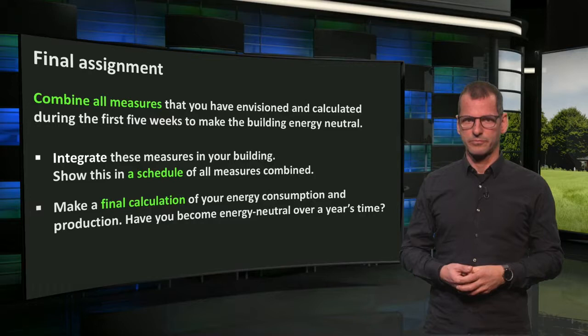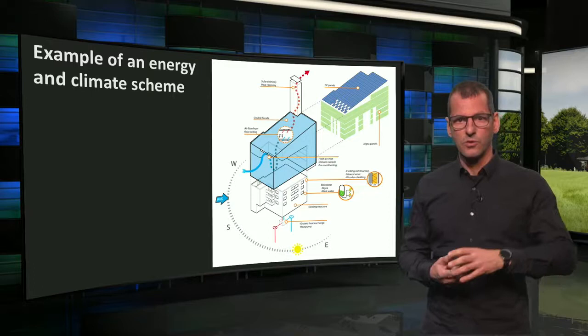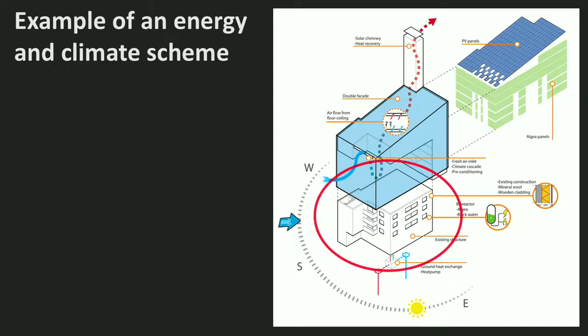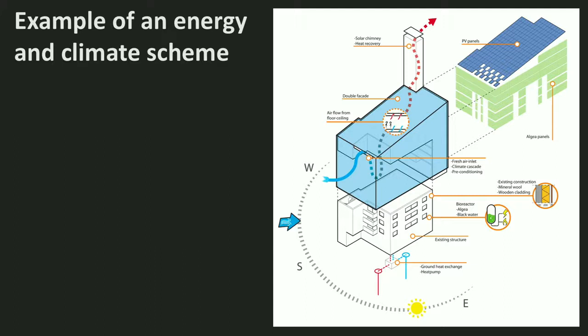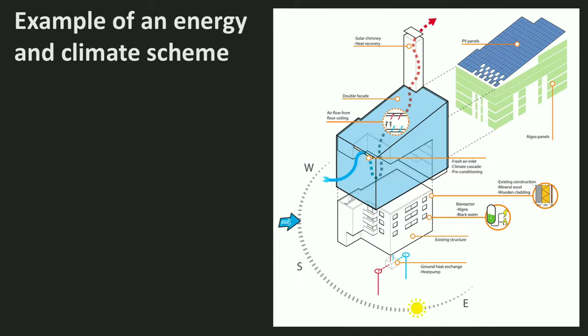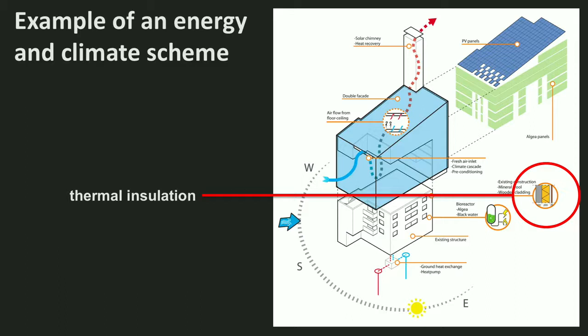Here you see a climate and energy scheme of a student who already did a redesign of an existing building. At first it may look like chaos, but I will guide you through step by step. Here you see the original building that the student worked on. The student drew the course of the sun in this part of the world — it is the azimuth only, but the altitude of the sun should also be understood, of course. As part of step one, reduce, the student proposed a post-insulation scheme of the original facade.